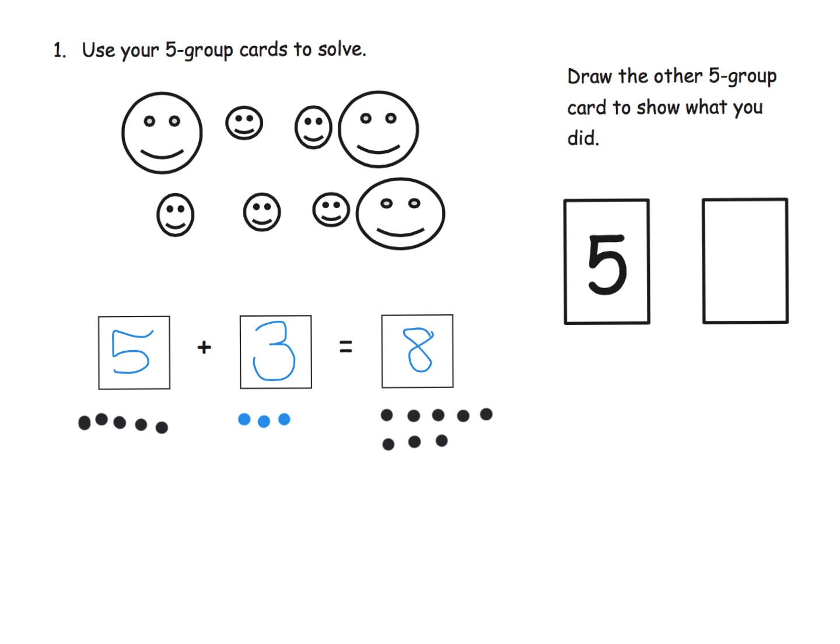So this is what they might grab their cards and set it up to show us that five is five dots, three is the three dots, and the total is eight, which happens to be a row of five and a row of three.